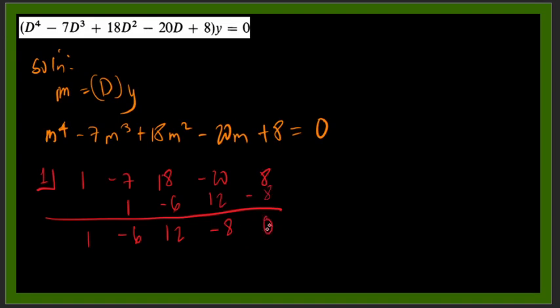So if the last answer or the last column will be equal to 0 when you are using synthetic division, so there is no remainder. Therefore, your chosen expected root is one of the roots of the equation. So we could say that our m sub 1, the first root, is equal to 1. Then we will end up with this equation.